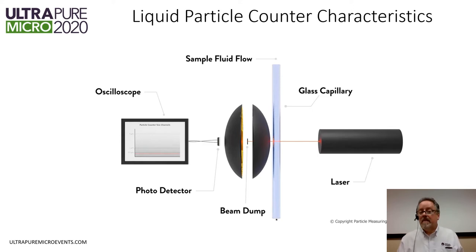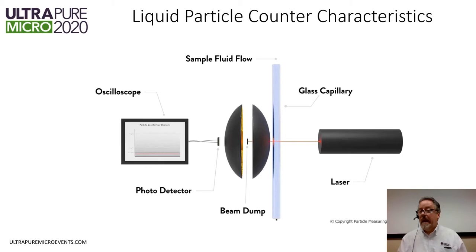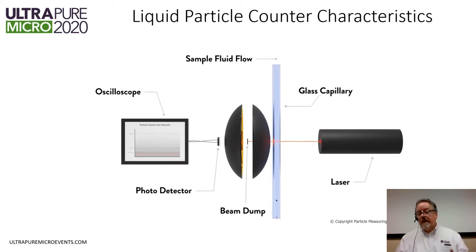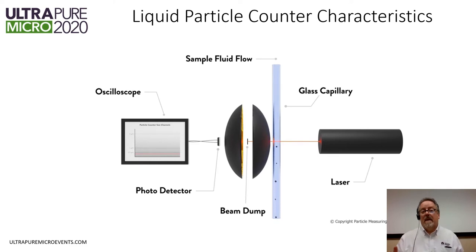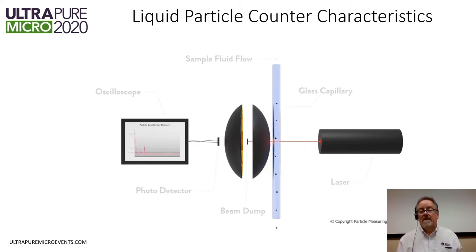This is a typical liquid particle counter. We have a light source, a laser, and a means of focusing the laser down to a flow capillary where the fluid that you want to measure is passing through. You have a means of collecting the scattered light that occurs when the particles pass through the laser beam, and you focus that light down onto a photo detector, which creates an electronic signal that you can measure.